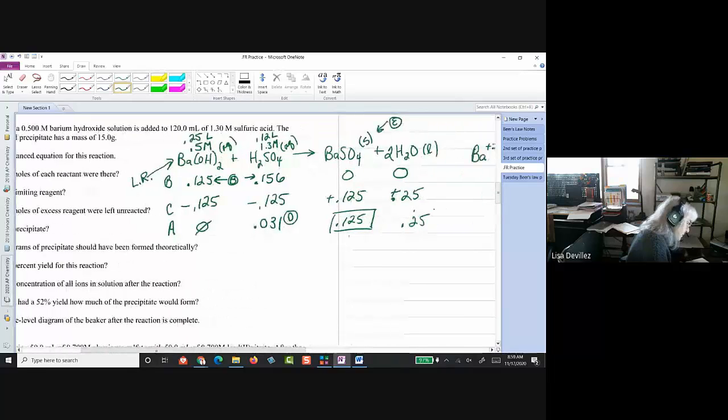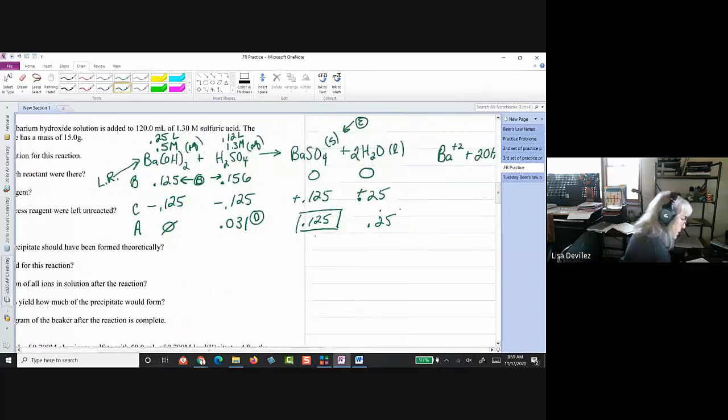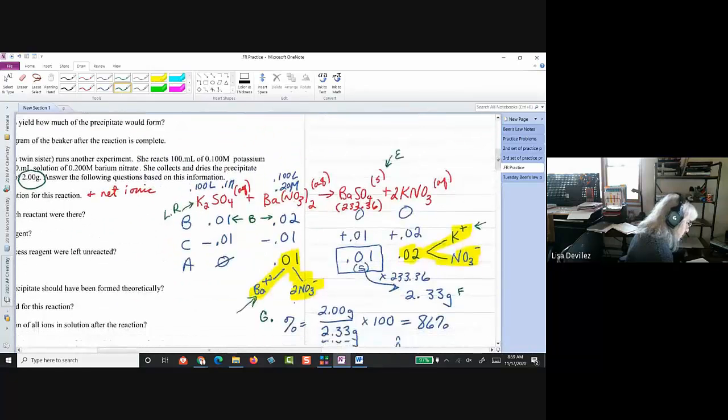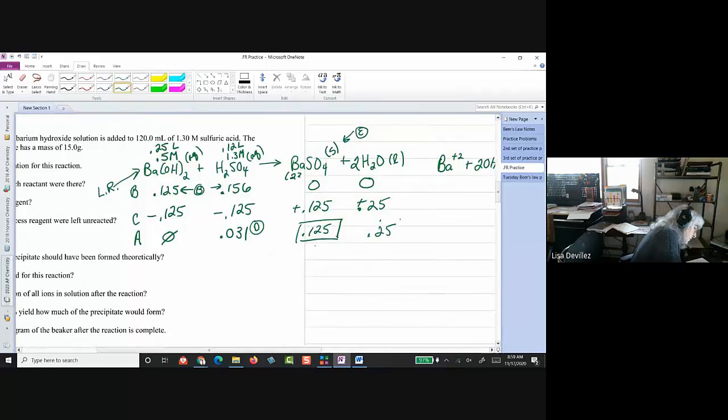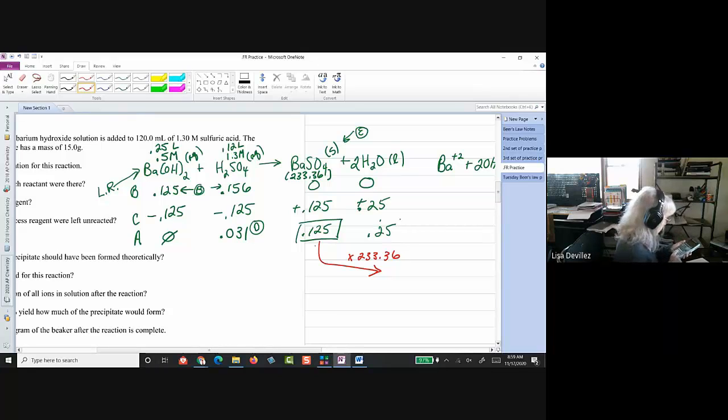Precipitate is the barium sulfate, so that's E. Grams of precipitate should have been formed. So, barium sulfate, hang on, I'm going to go back up to get that molar mass. That's 233.36, so 233.36, all right, so I'm going to take that, times 233.36, getting 29.17 grams.